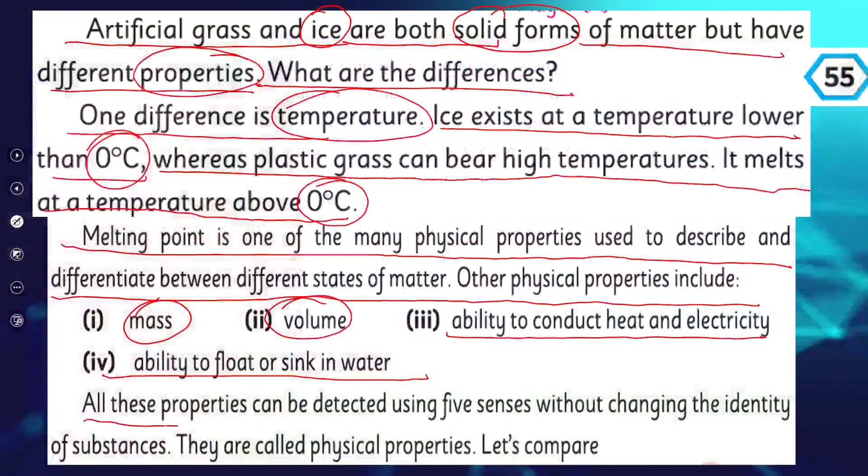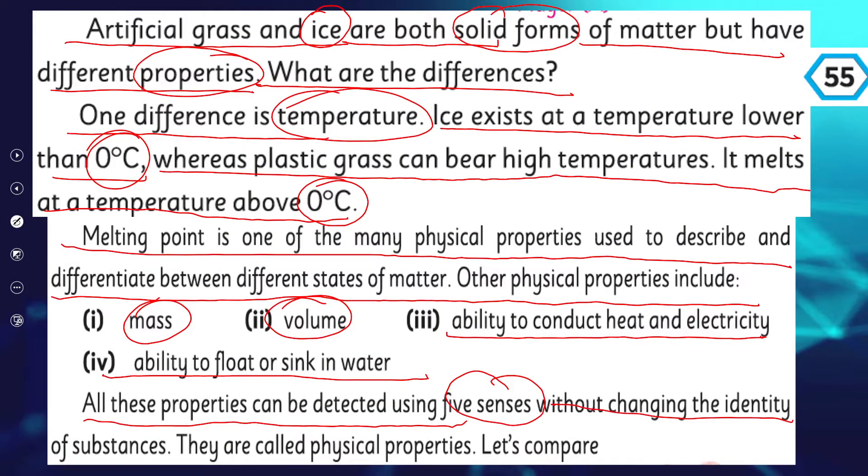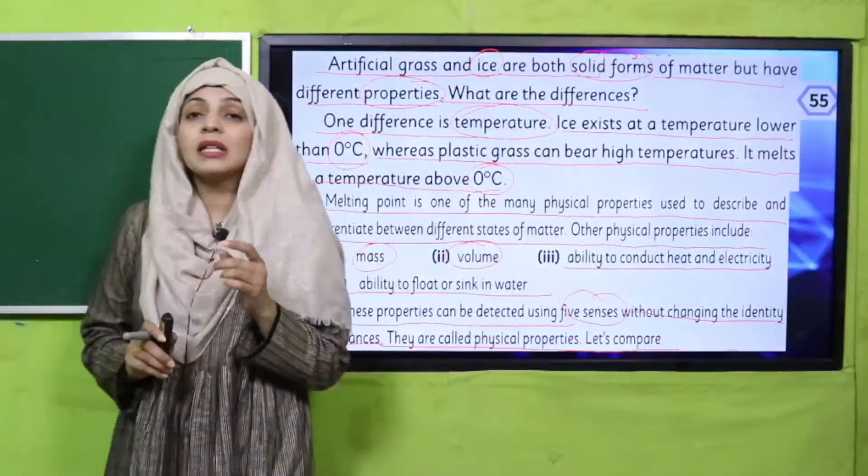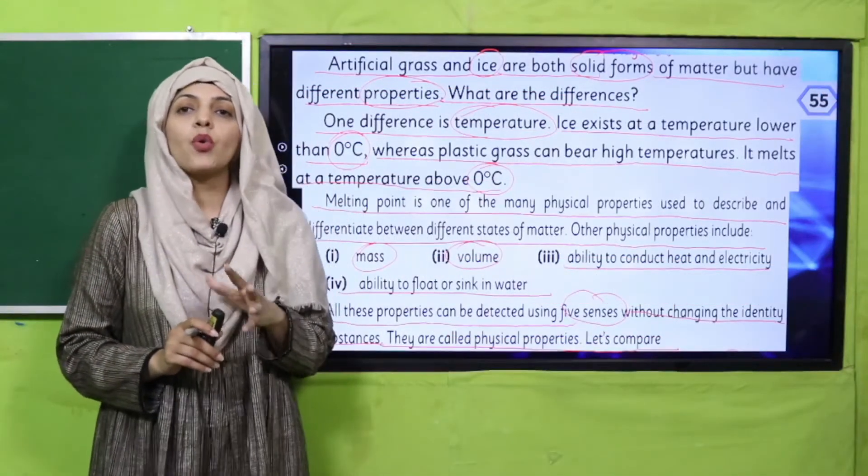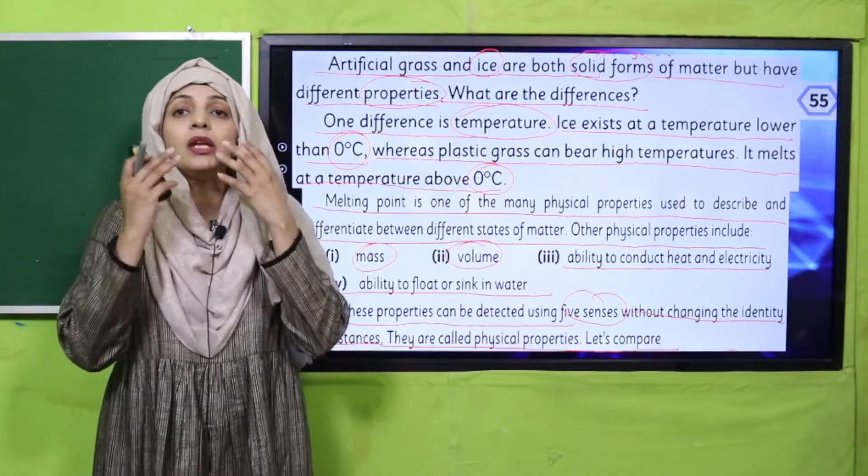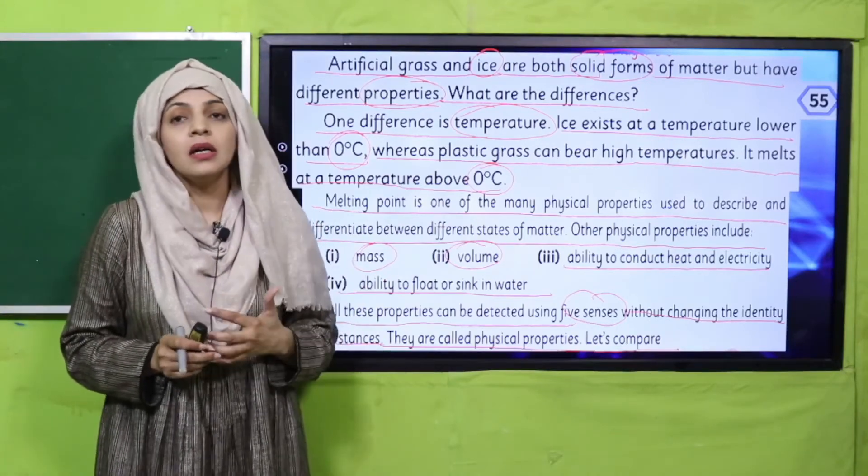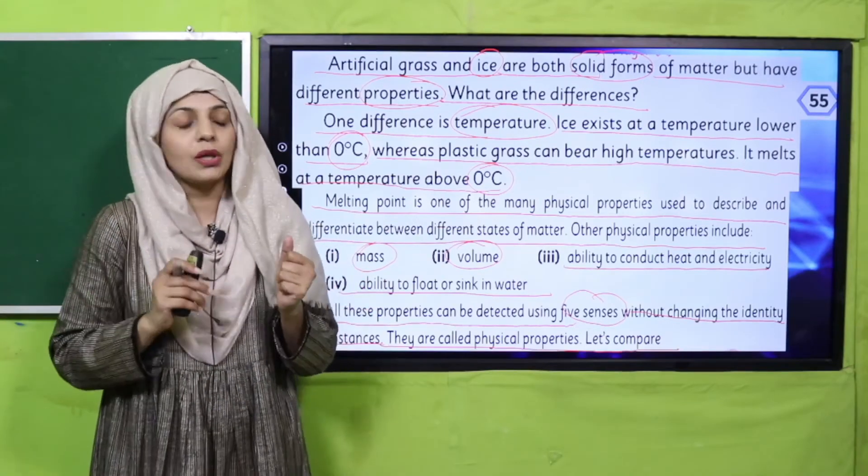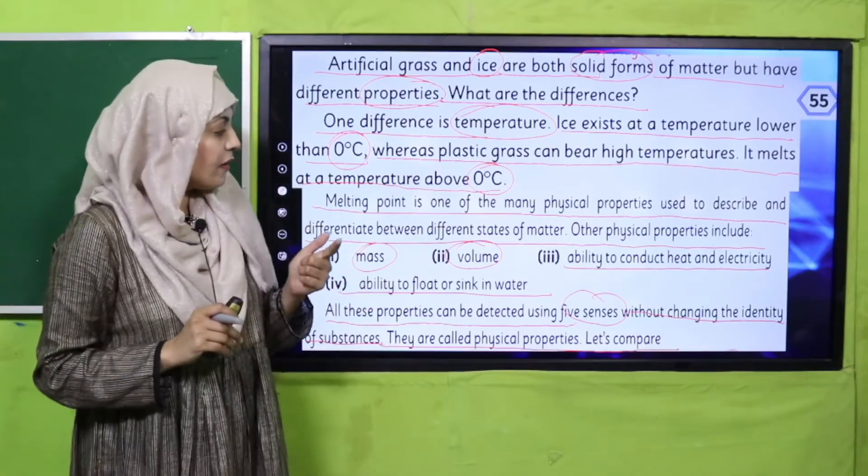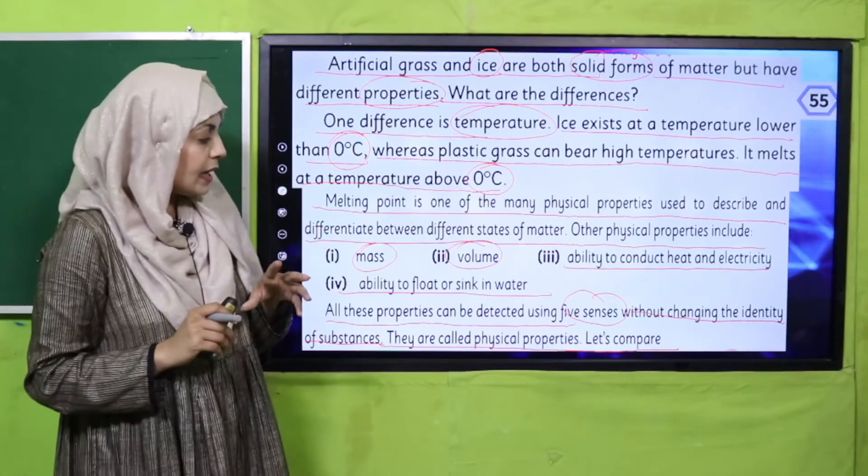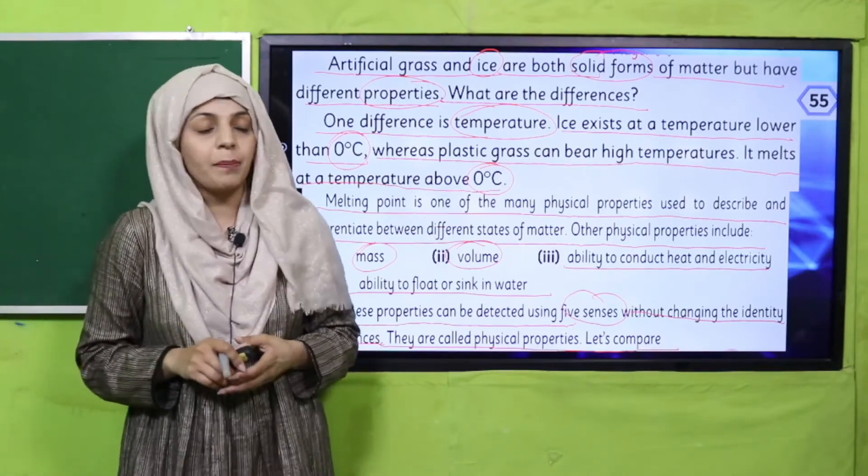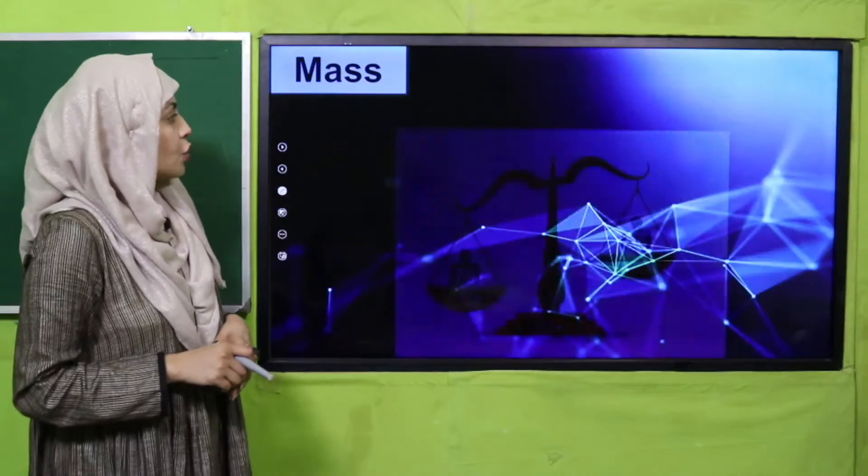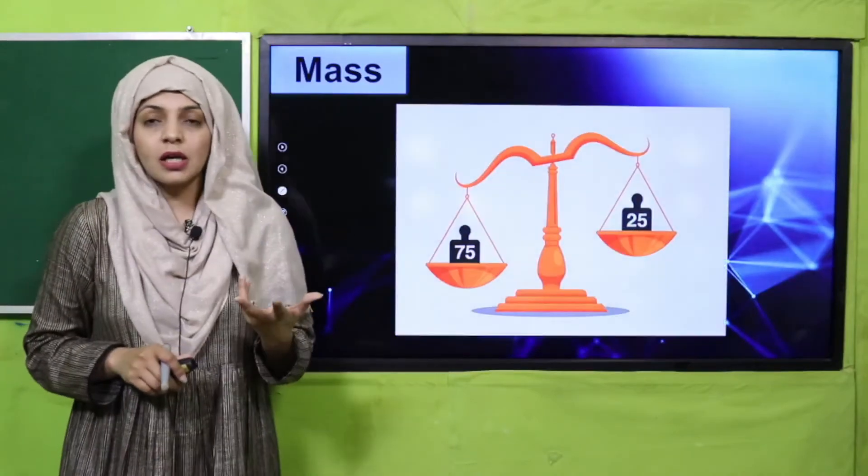All these properties can be detected using five senses without changing the identity of the substances. They are called physical properties. For these properties you don't need any special instruments - by looking at them, by touching them, you can tell the physical property. We can compare them using our five senses and we will compare these physical properties.